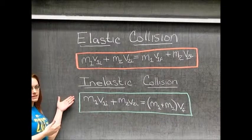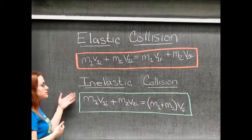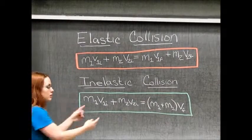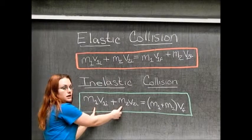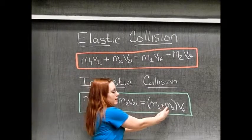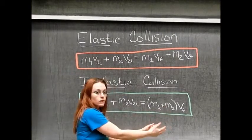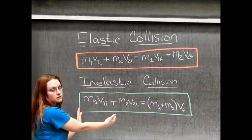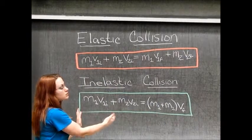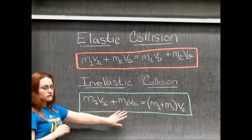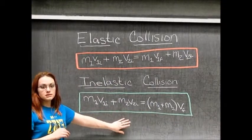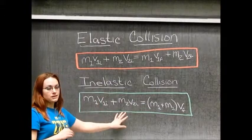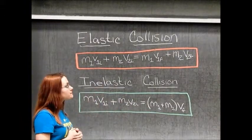Then there are inelastic collisions. Inelastic collisions are where two objects start apart and end together, or where two objects start together and end apart, like in an explosion. We will observe both of these with masses that are equal and masses that are not equal.